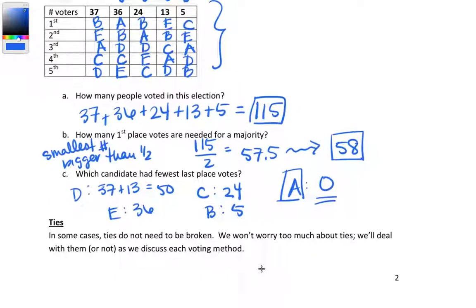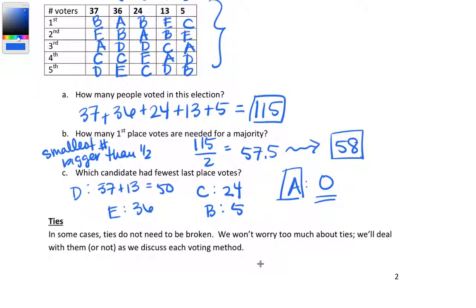The last thing to address is ties. We're going to deal with ties on a case-by-case basis depending on what voting method we're using, so we won't tackle them here — we'll deal with them in later sections as needed. That is the end of Section 1.1. Thank you for watching, and I hope you look forward to the next video.